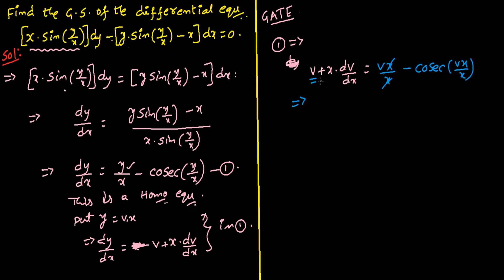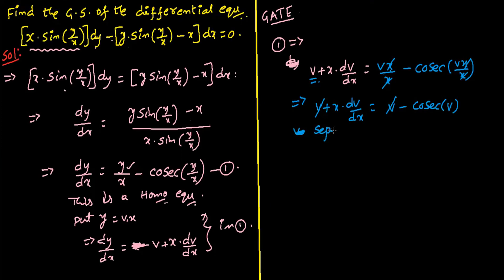The v terms on both sides cancel, so x times dv/dx equals minus cosec(v). Now we apply the variable separable method, separating the variables: all v and dv terms on one side, all x and dx terms on the other side.